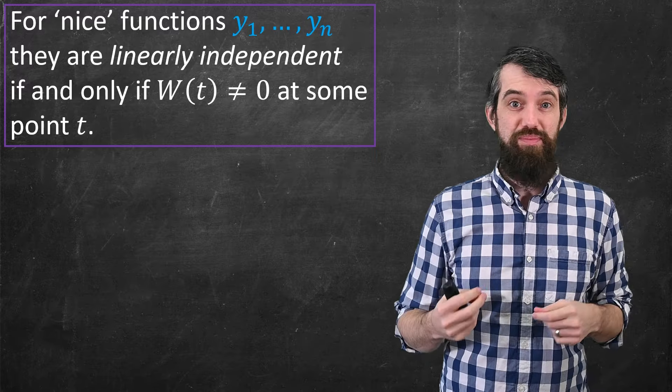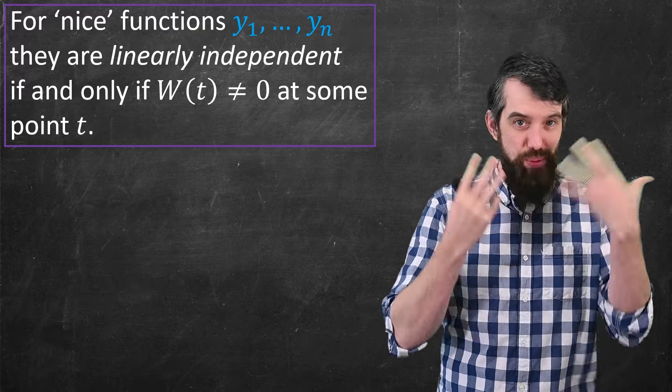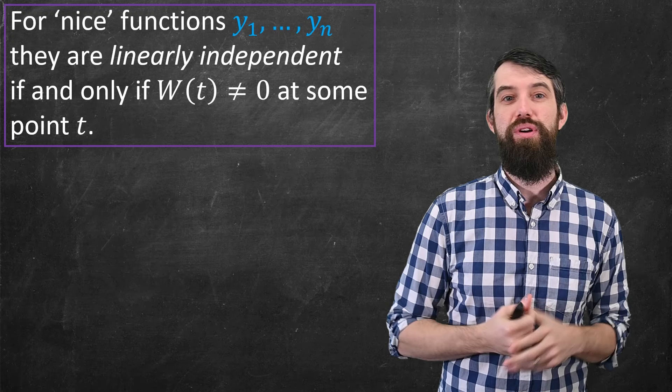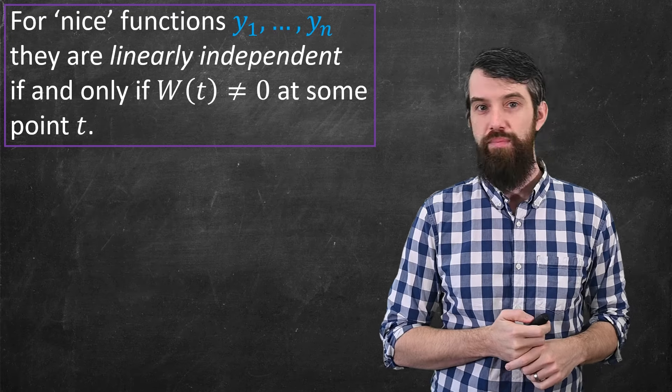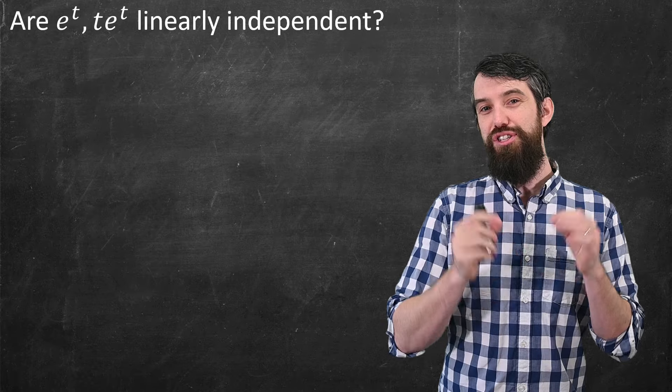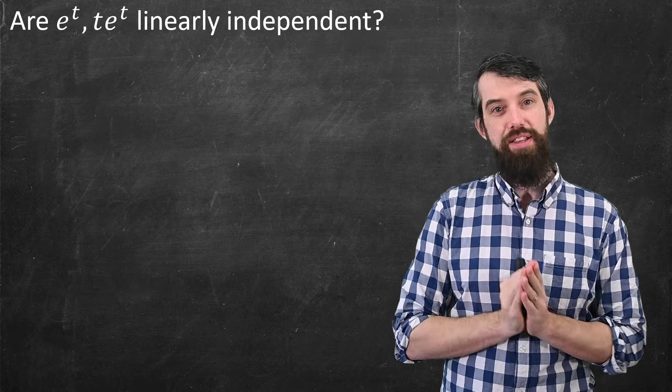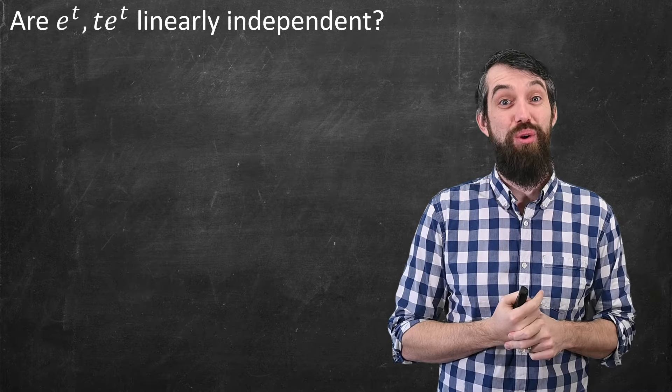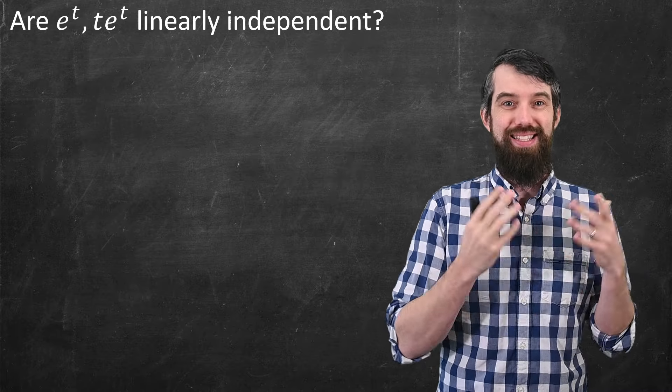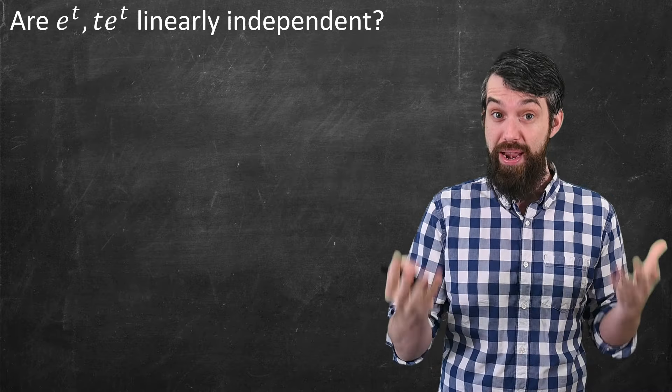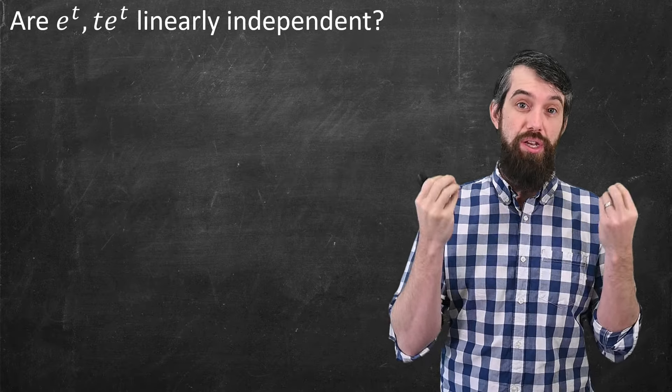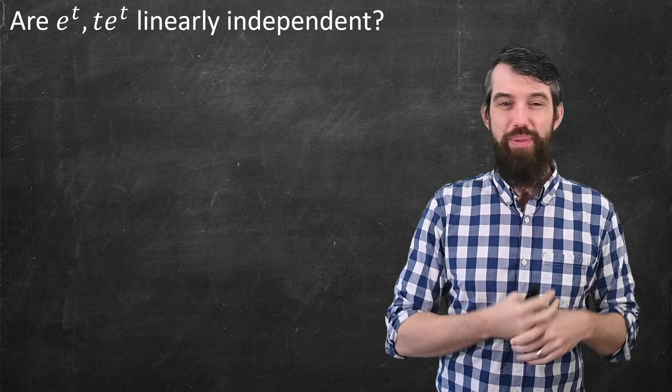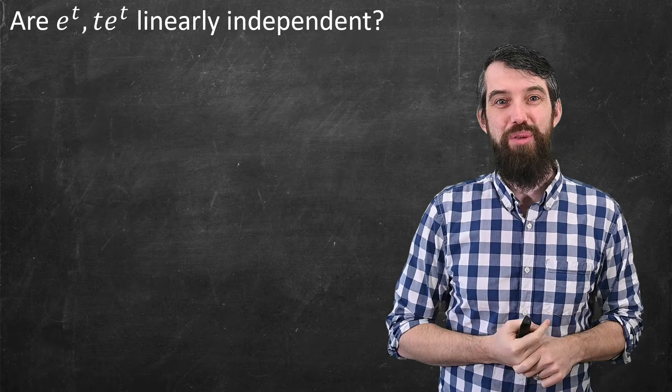So either way, we have this test. You just take these n functions, plug them into the Wronskian, and take that determinant. If that determinant is ever non-zero, then they're linearly independent. So let's see another example. I'm going to choose eᵗ and t·eᵗ. I chose these because they come up when doing constant coefficient differential equations with repeated roots. But right now I'm just asking, are they linearly independent? I can glance at them and say one is t times the other, but that's not a constant multiple. Let's just prove it with the Wronskian.